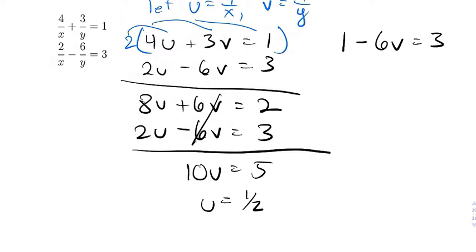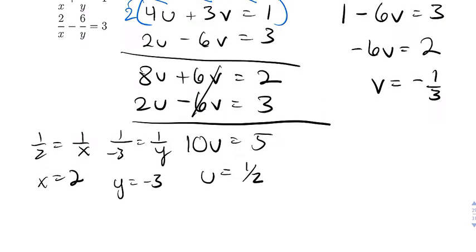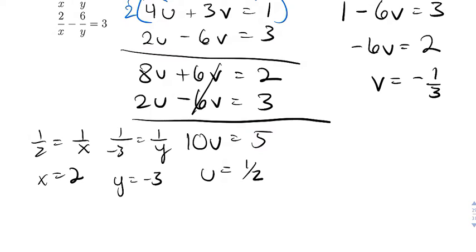So then I'll plug into the second equation. So I'll get 1 minus 6v equals 3, negative 6v equals 2, so then v equals negative 1 by 3. So now if u is 1 half, then 1 half equals 1 over x, that means x equals 2. If v is negative 1 over 3 and that's going to equal 1 over y, then y should equal negative 3. So the ordered pair should be 2 comma negative 3.